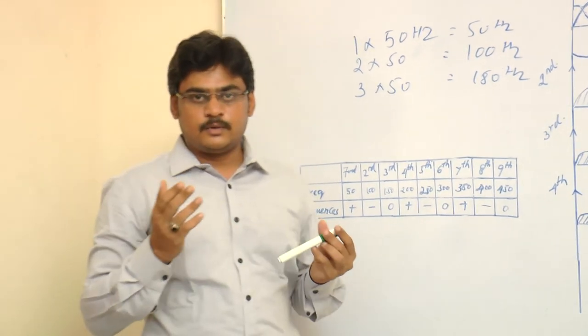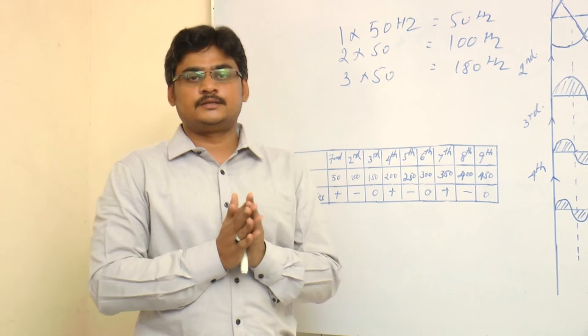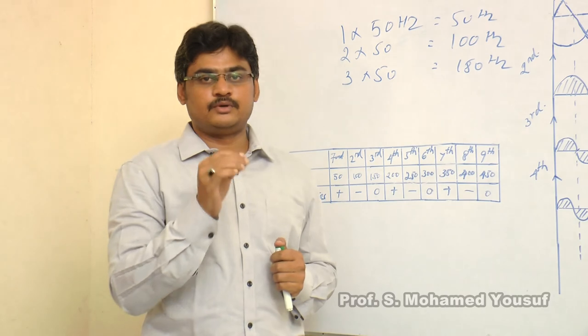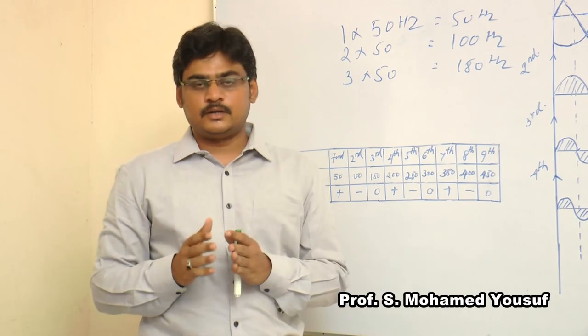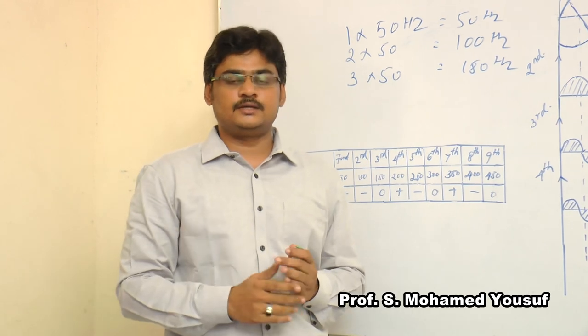Now I will tell you how to minimize harmonics in power converters. Normally voltage harmonics mainly depend on the source and can be minimized by using input impedance. Current harmonics are mainly because of non-linear loads and can be minimized by using LC filters.